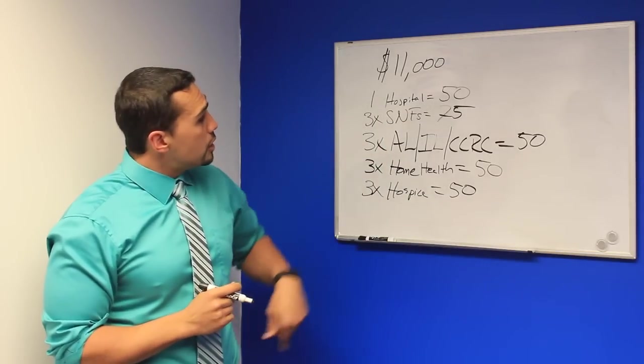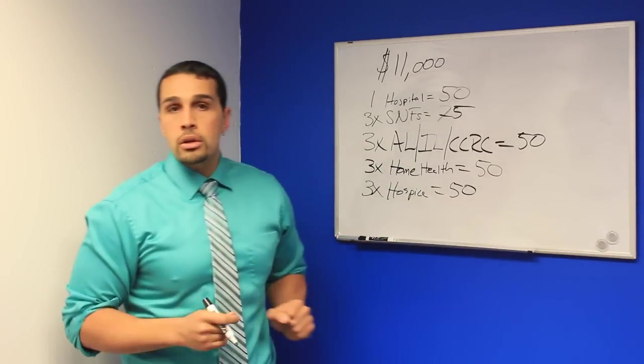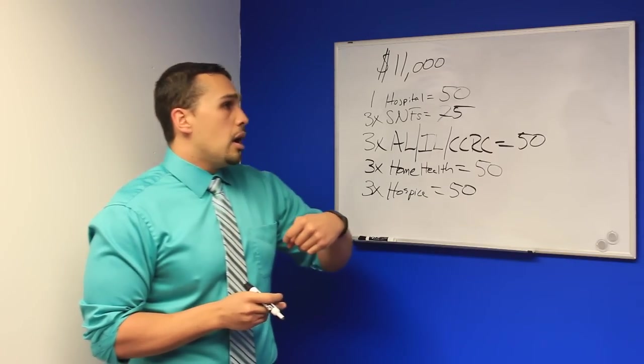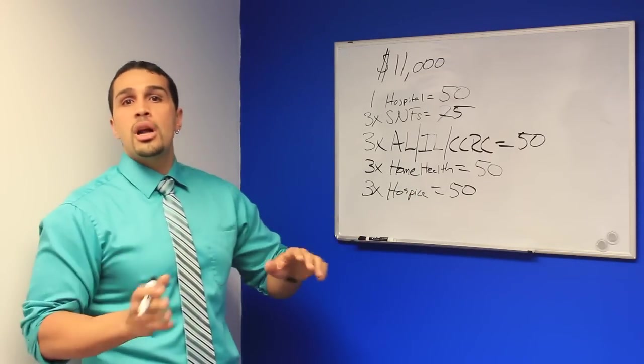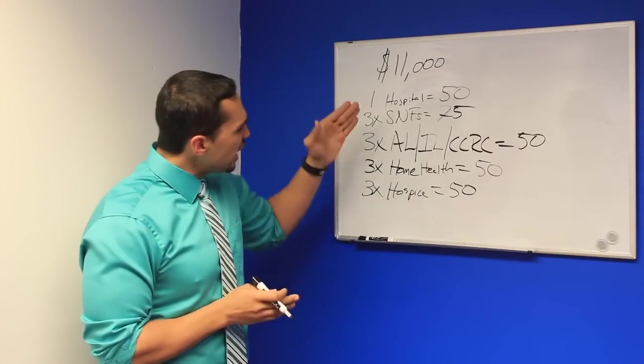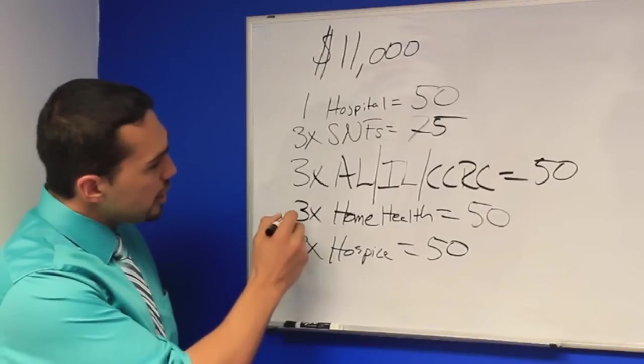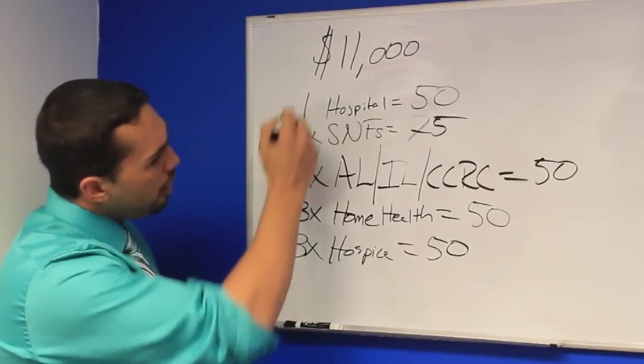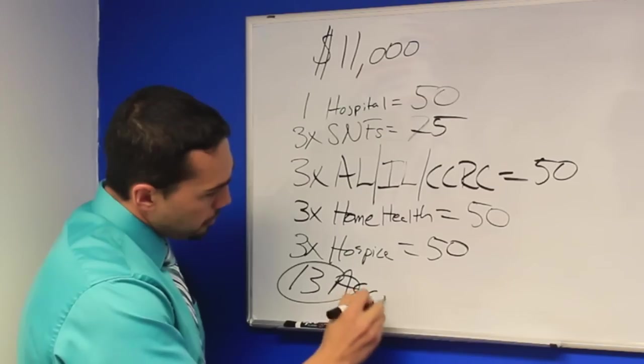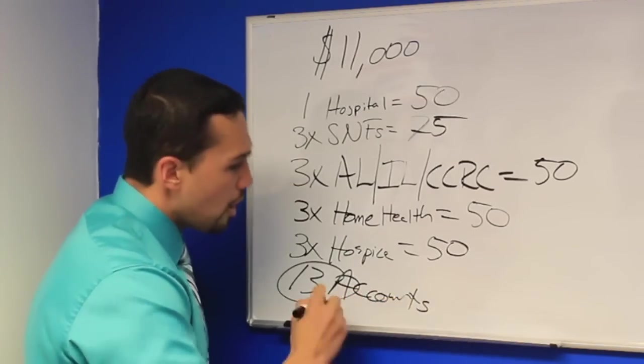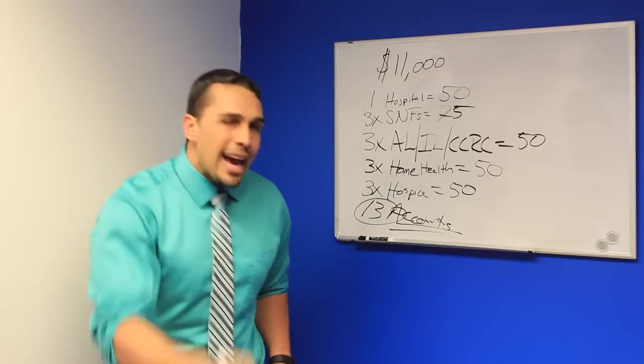Alright? Now this isn't even including elder law attorneys, and adult daycare, physicians, and other referral source types. Just staying with this. This is a total of three, six, nine, twelve, thirteen accounts. Thirteen accounts. Thirteen accounts.